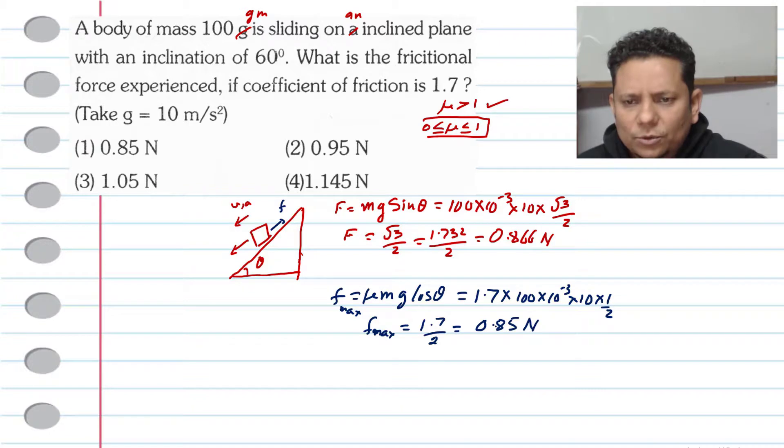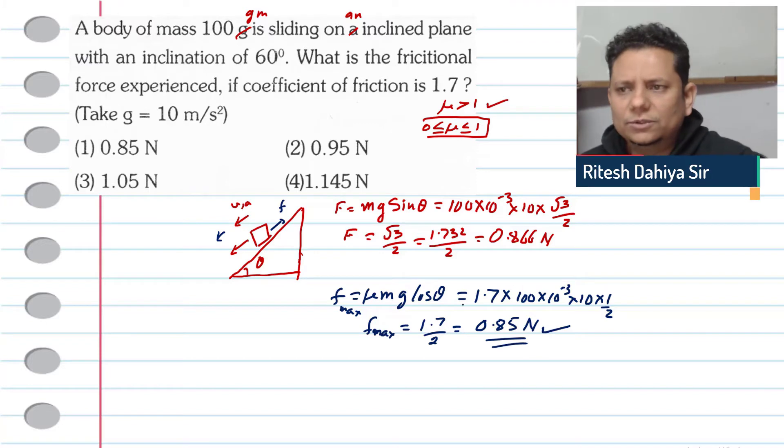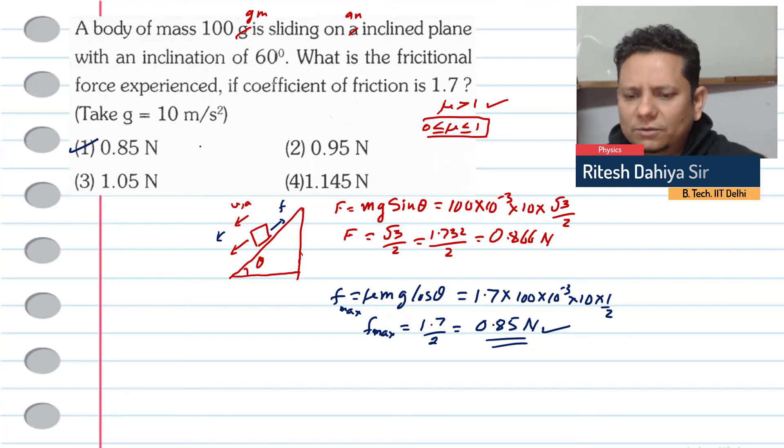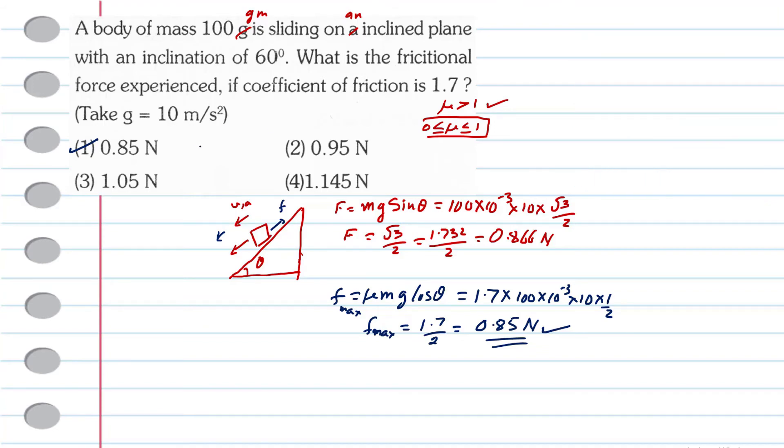Now in this case, because your driving force is 0.866 newton and maximum friction force is 0.85 newton, the driving force is more than the maximum friction force.